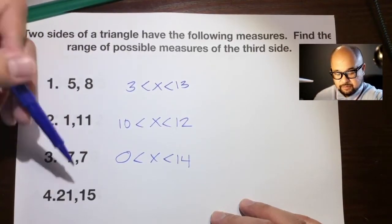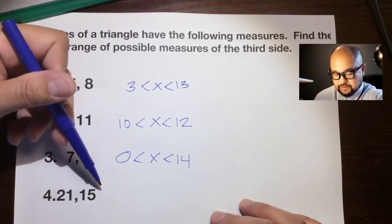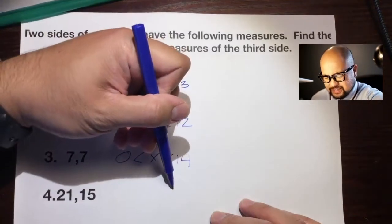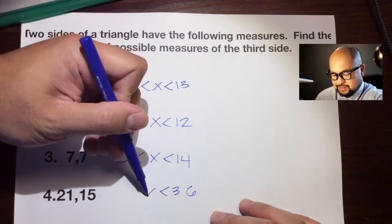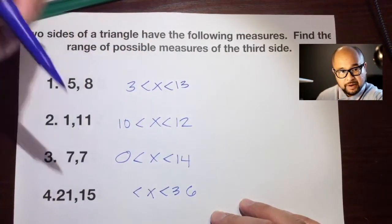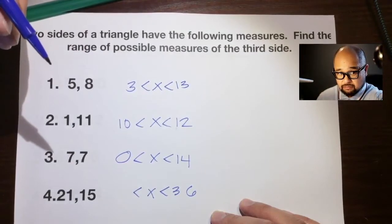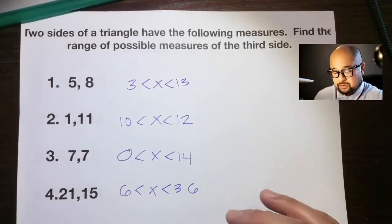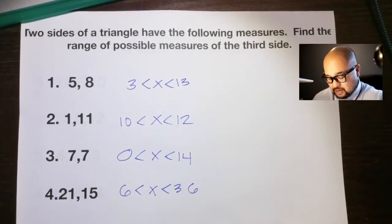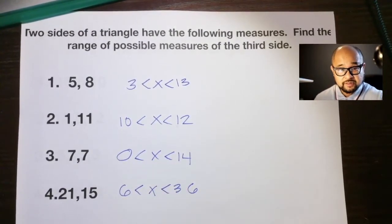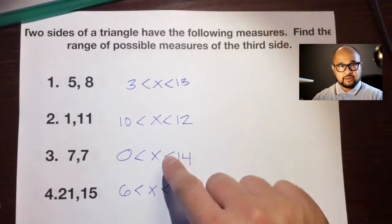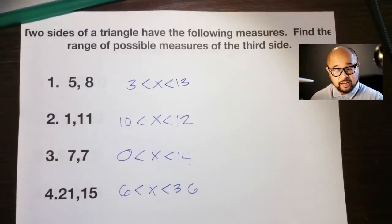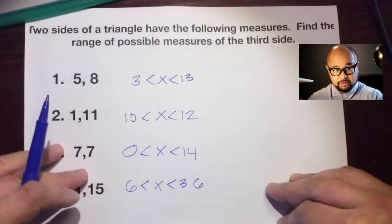For sides 21 and 15: what's the maximum? Remember, we add and subtract. 21 plus 15 is 36, so less than x. And 21 minus 15 is 6. So in between 6 and 36, but not equal to these numbers. It can't be 37, it can't be 5 — but it could be 7, 8, 10, 20, 21. Any number in between these numbers would be able to create a triangle.